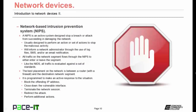Then there's the Network Based Intrusion Prevention System, or NIPS. A NIPS is an active system designed to stop a breach or an attack from succeeding in damaging the network. They're usually designed to perform an action or set of actions to stop the malicious activity. Just like the NIDS, the NIPS will inform a network administrator through log files, text messages, voicemail, and/or email notifications. All traffic on the network system is required to flow through the NIPS to either enter or leave the segment. Like the NIDS, all traffic is evaluated against a set of standards. The best placement on the network is between a router — which hopefully has a firewall — and the destination network segment.